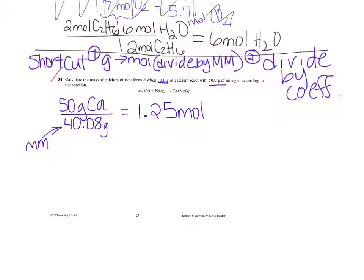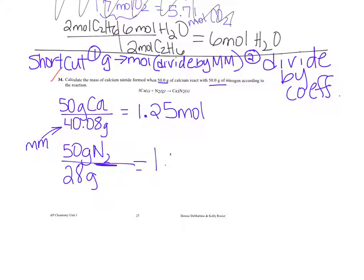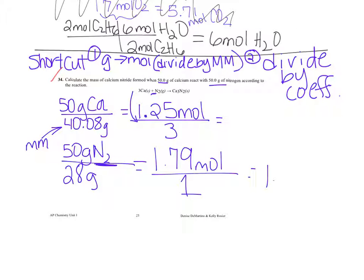Now we get nitrogen into moles as well. Nitrogen is diatomic, so its molar mass is about 28. So 50 grams of nitrogen divided by 28 gives approximately 1.79 moles. Both are now in moles. We divide each by their coefficients: calcium gets a three, nitrogen gets a one. Nitrogen's ratio is 1.79 and calcium's ratio is 1.25 divided by three, which is about 0.42.